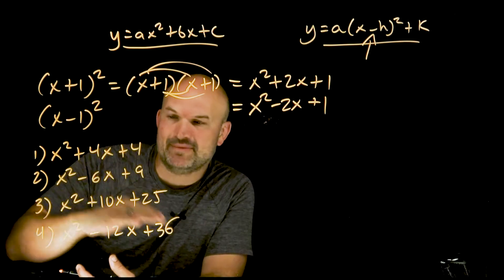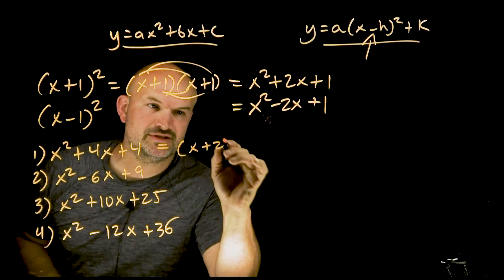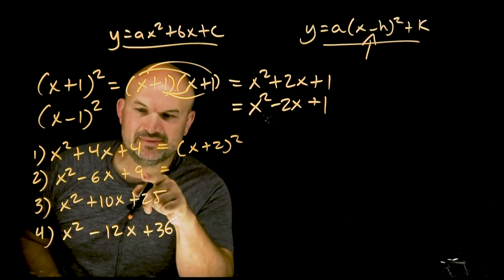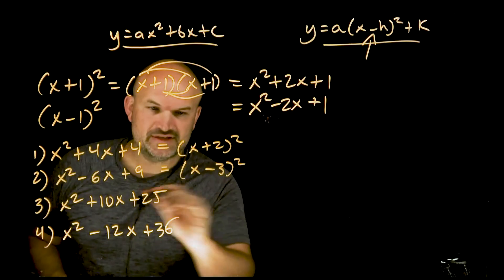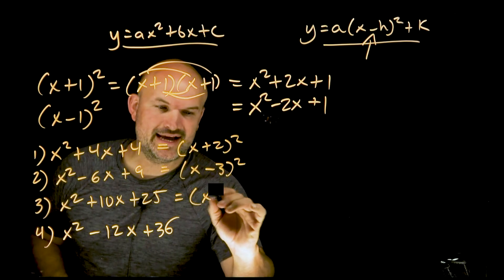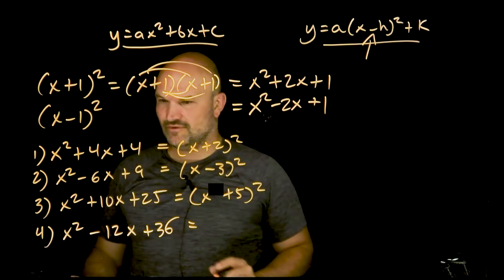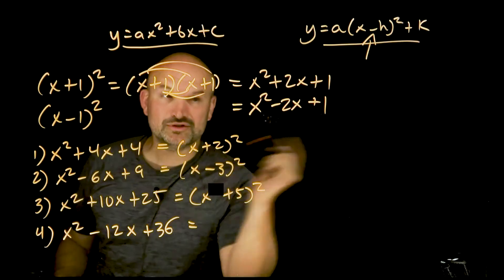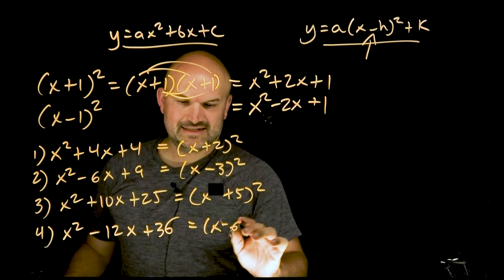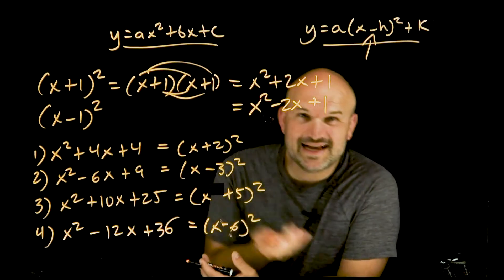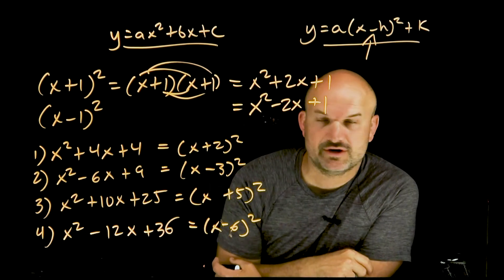You can always think about this like in your factoring head, like what two numbers multiply to give me my last number, add to give me my middle term. But you should also recognize that these have the patterns of perfect square trinomials. If I was going to factor this, this would be (x+2)². This one would be (x-3)². This one here is going to be (x+5)². And this one will be (x-6)². And again, you can always go back and check your work to make sure that those multiply out to give you that perfect square trinomial.